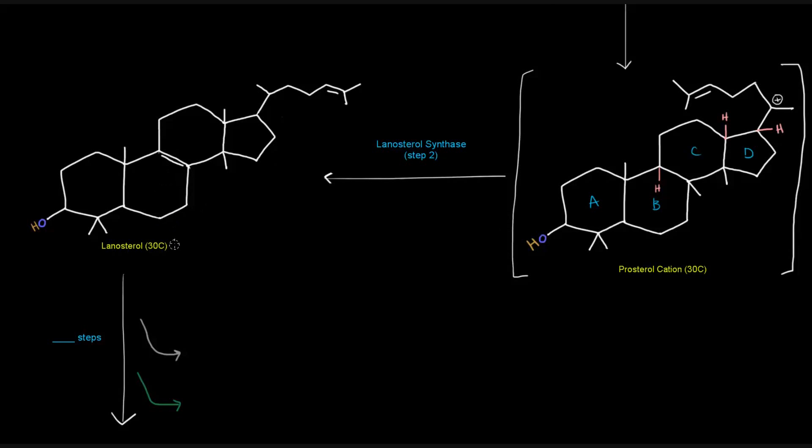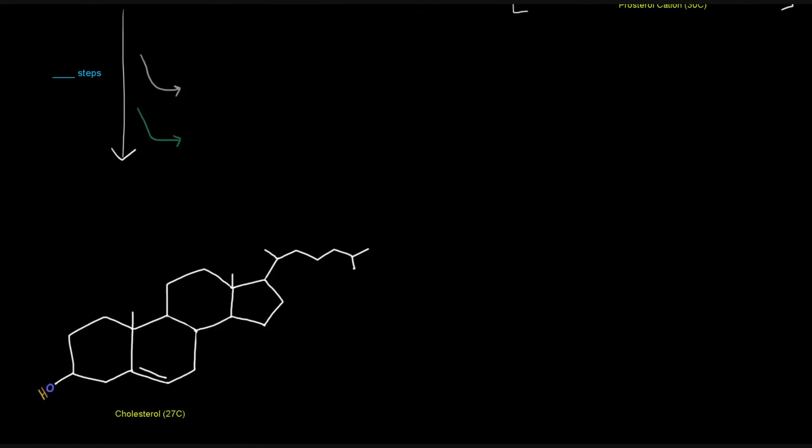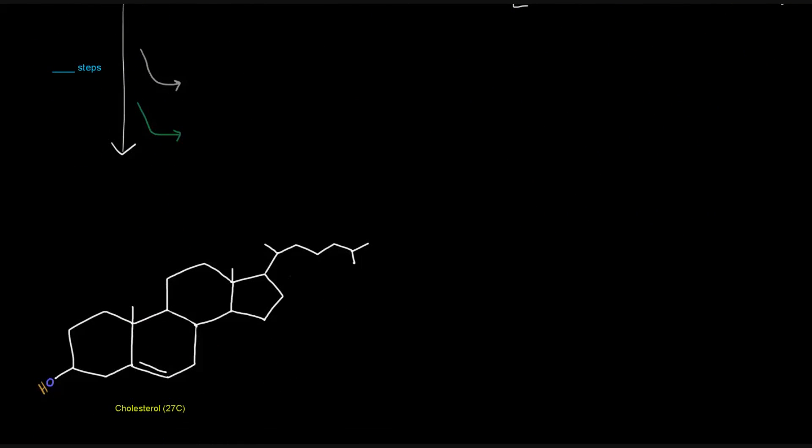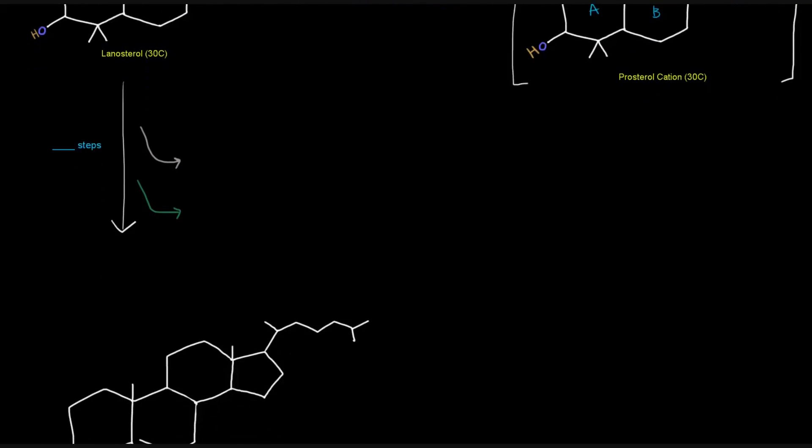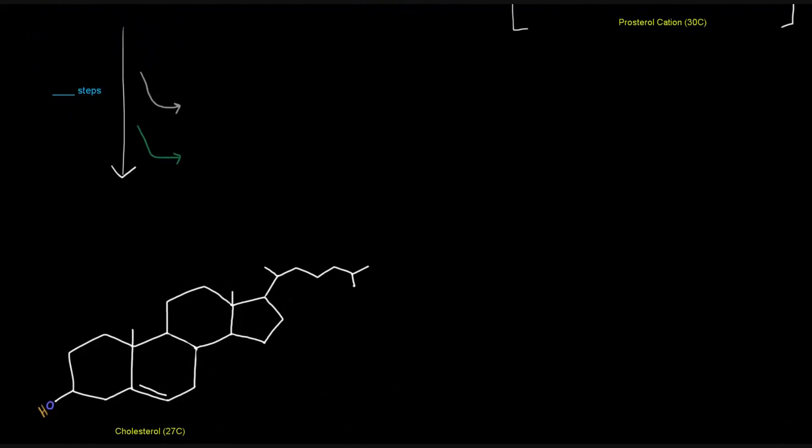but it has 30 carbons. So we need to get rid of three carbons, and we do need to move some things around here to get our final product, which is, of course, cholesterol shown here. But there's a bunch of steps in between these two, in between this lanosterol and between this cholesterol. In fact, there are 19 steps.